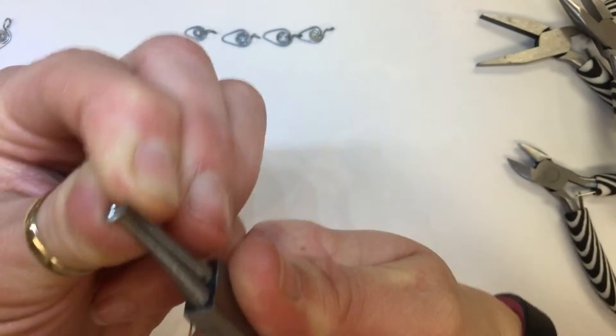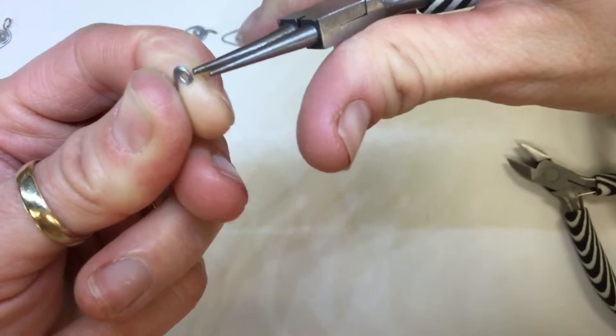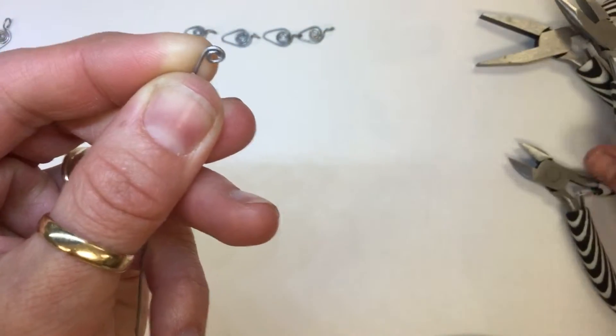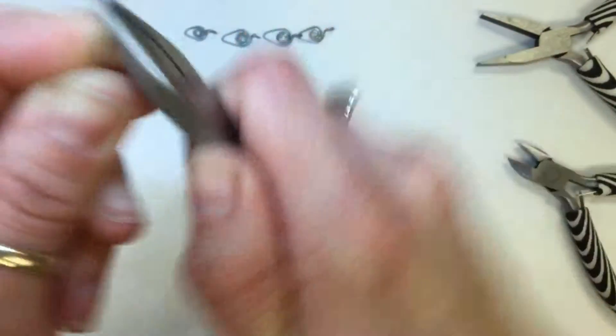Do about one and a half times and you can switch to the flat nose. Switch over to the flat nose to finish out about three times around for the spiral.